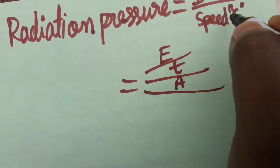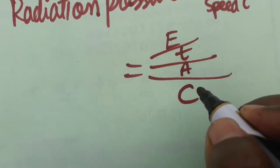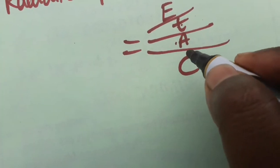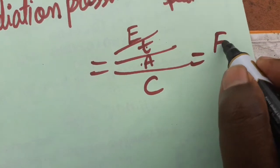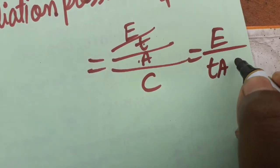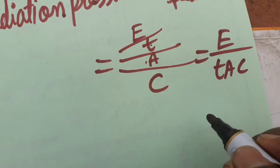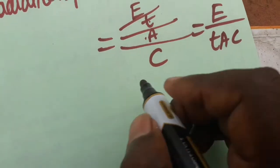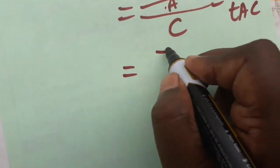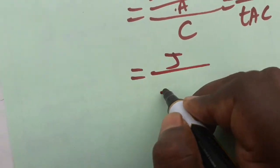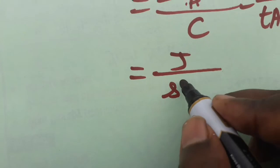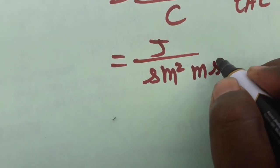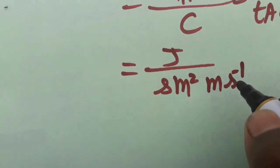The speed of light is also in the denominator, so everything is in the denominator. Combining them: radiation pressure equals energy divided by (time × area × c). Energy is in joules, time in seconds, area in meter squared, and the velocity of light in meter per second.